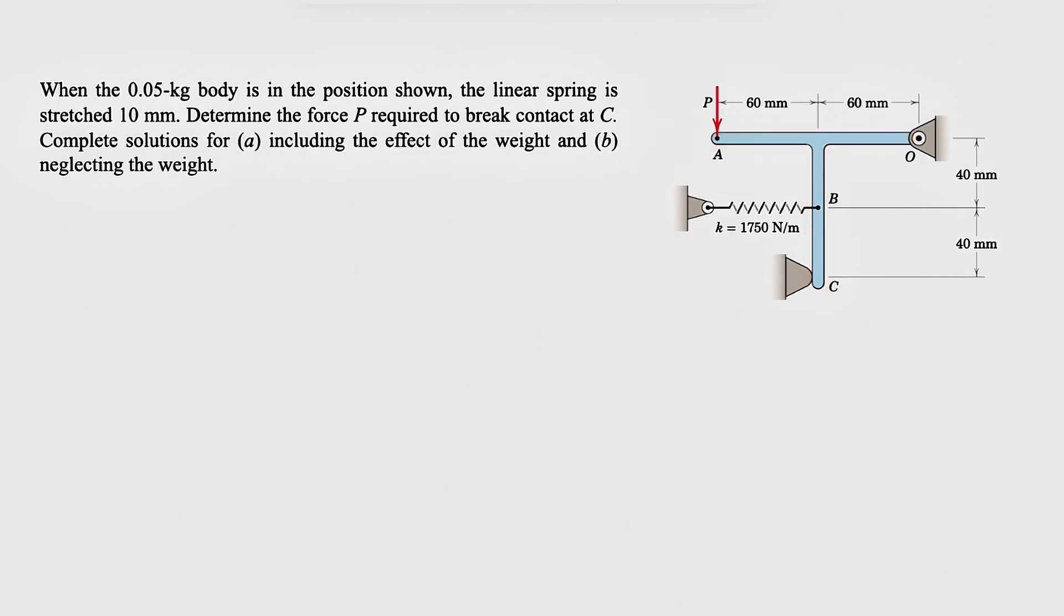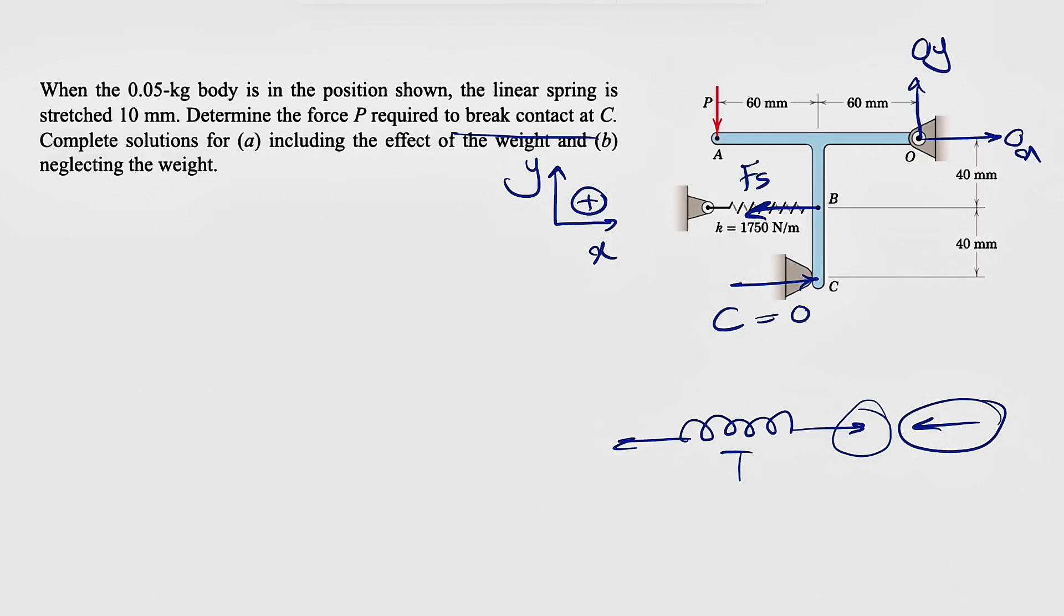We'll start with the free body diagram of the beam and all supports applying forces. We have force P at A. For point O, we'll consider both X and Y components. We have a normal force at C, with no friction between the support and body. Since the required P breaks contact at point C, we consider zero force at C. The spring is in tension, so the force from the body to the spring means the spring applies force to the body in the opposite direction by Newton's law. We call this Fs, the force in the spring.